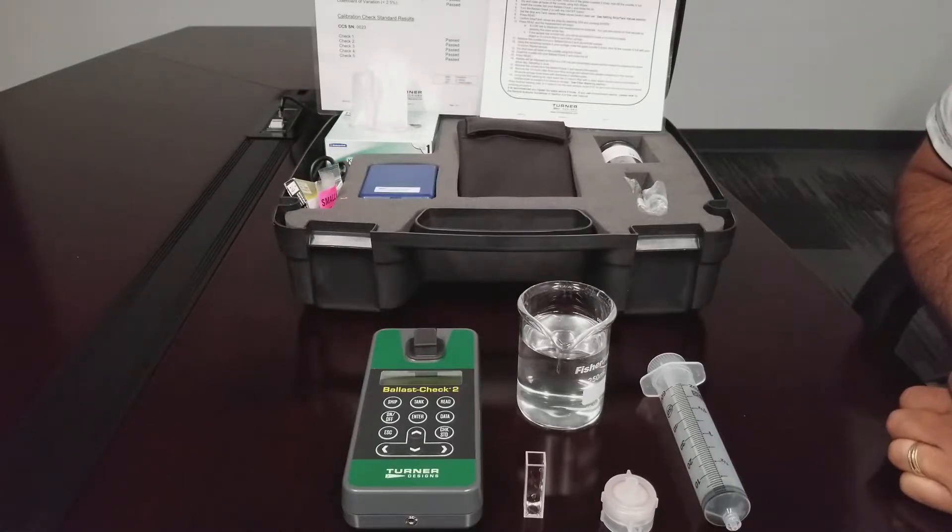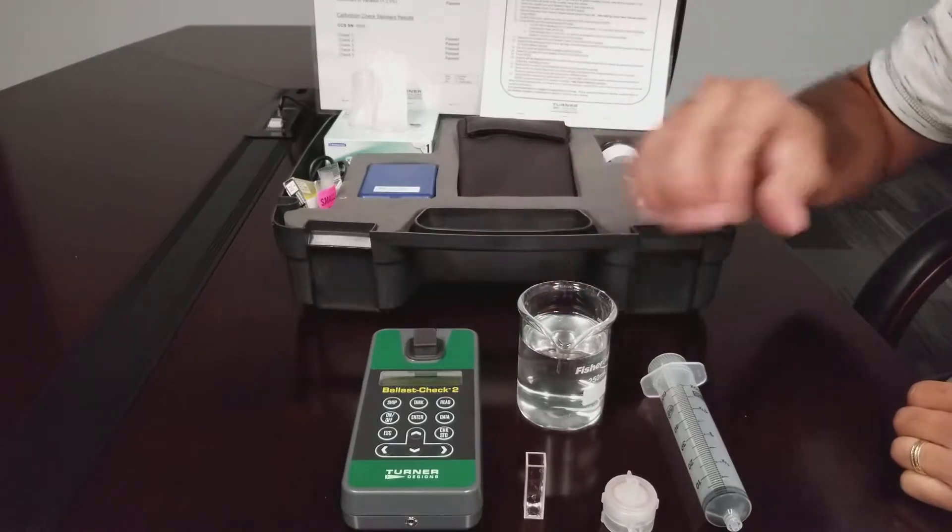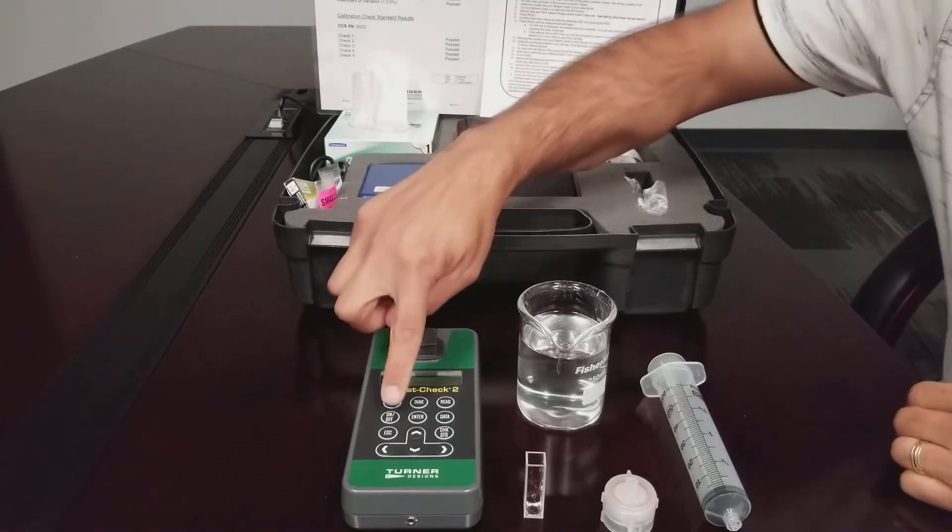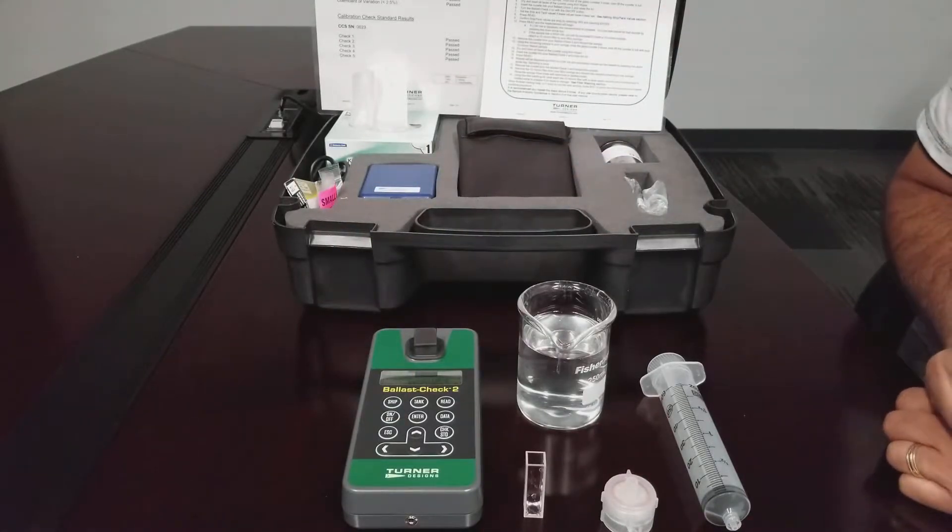This procedure will describe how to measure a sample using the Ballast Check 2. These are the items required to measure a sample. Begin by pressing the on-off button and wait for the 5 second countdown.